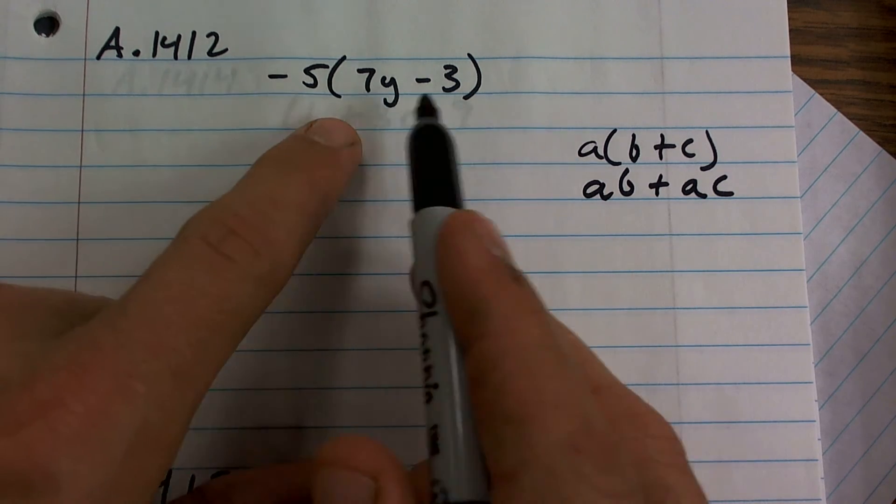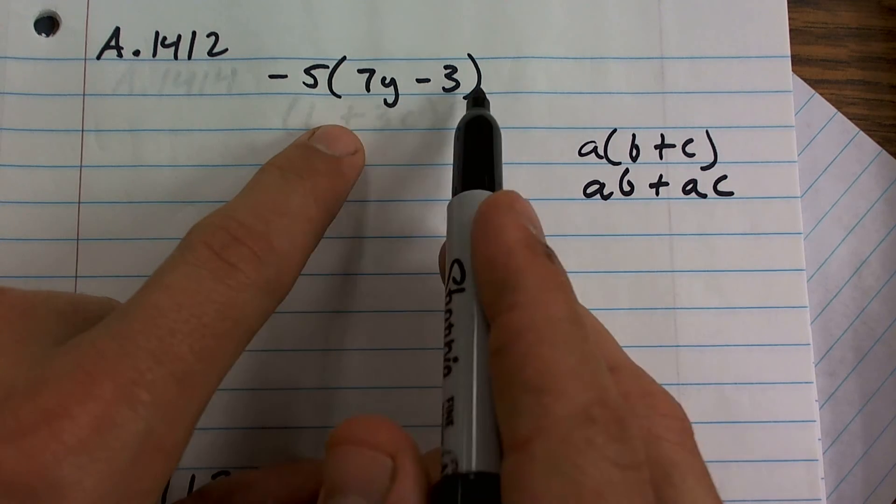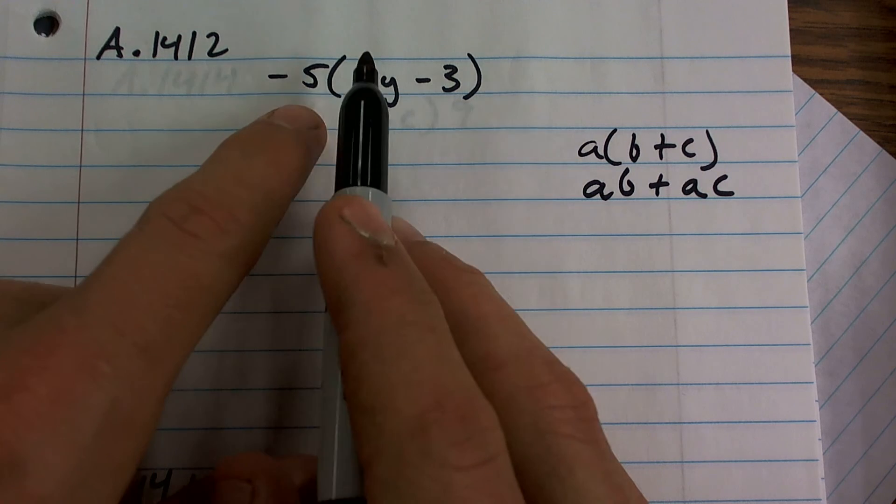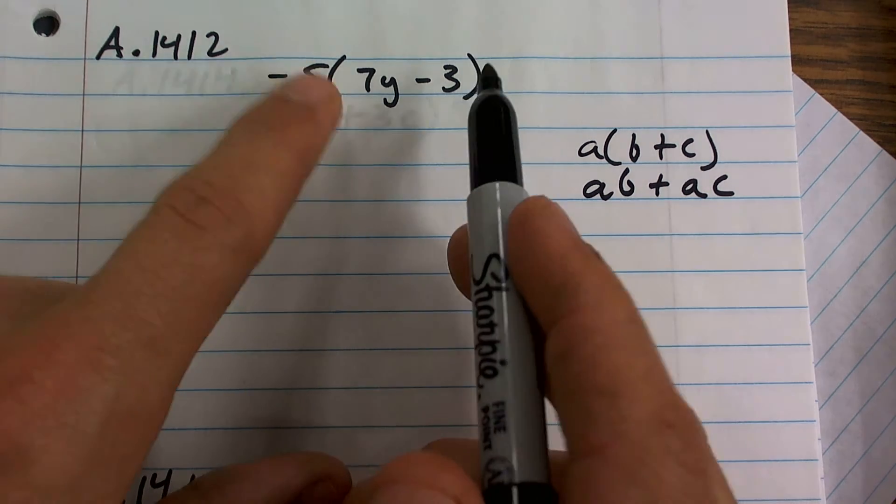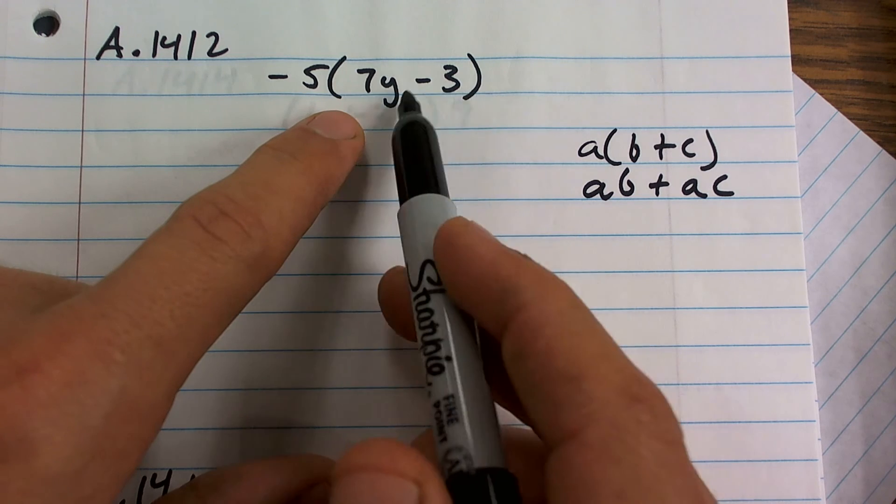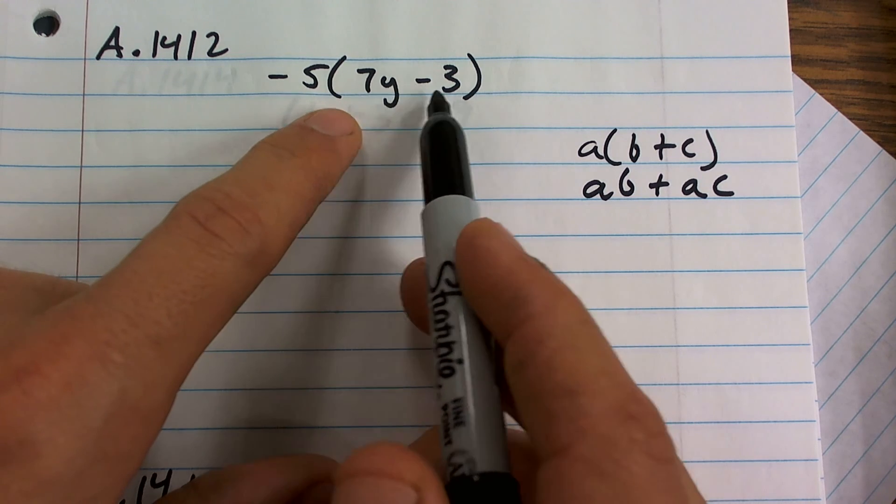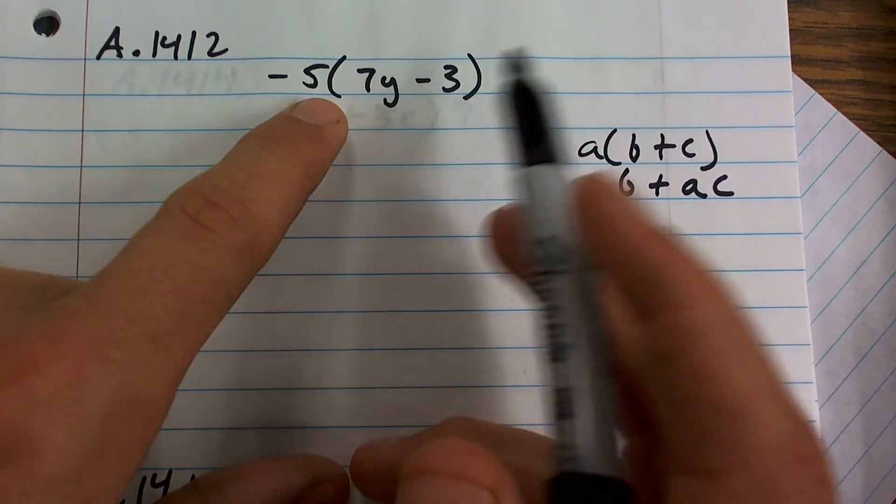So here my outside number is negative 5 and inside the parenthesis I have 7y minus 3. That means negative 5 is being multiplied by 7y minus 3. Now inside these parenthesis I want to see can I combine these like terms at all and since they're not like terms, you can't combine them.